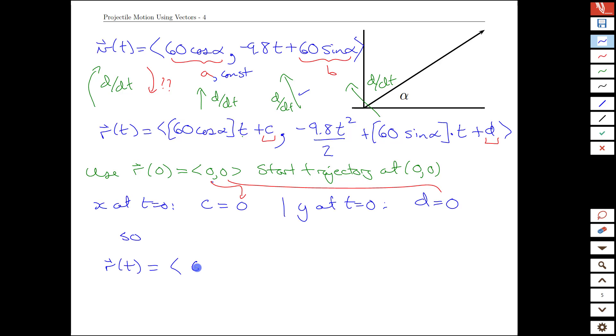So our position function for the trajectory of a launched particle with 60 meters per second and launch angle alpha is 60 cos(alpha) times t, comma, -9.8t squared over 2 plus 60 sin(alpha) times t, and that's it. This is our perfectly filled out vector valued function for the trajectory.